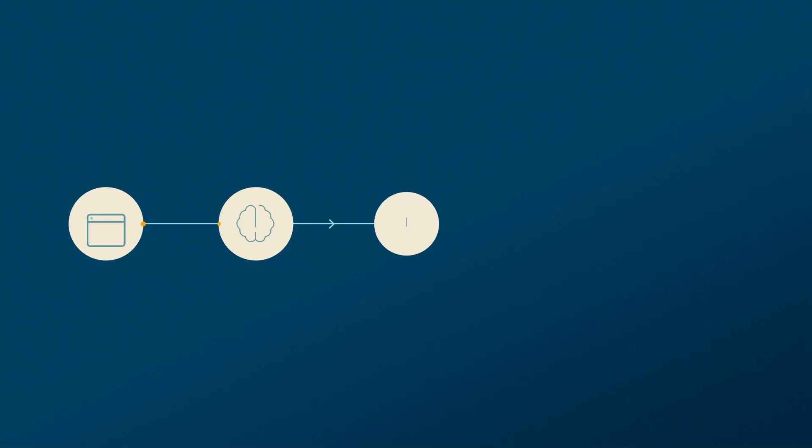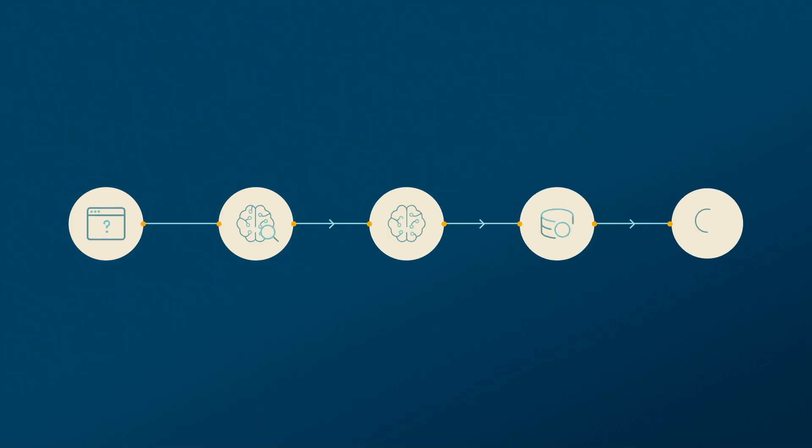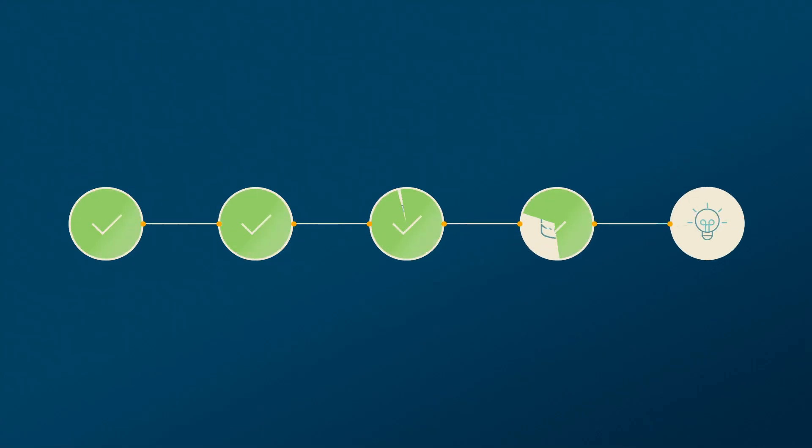Knowledge graphs uncover hidden patterns and crucial context to make your data smarter. When you pair knowledge graphs with RAG for graph RAG, your LLMs accurately answer queries with traceable, factual information.